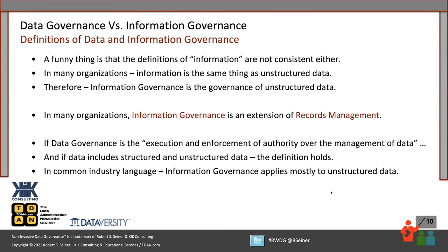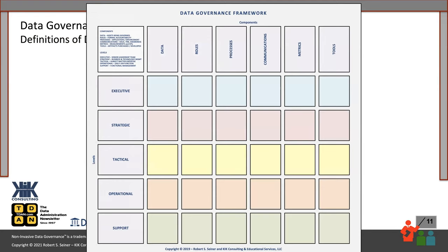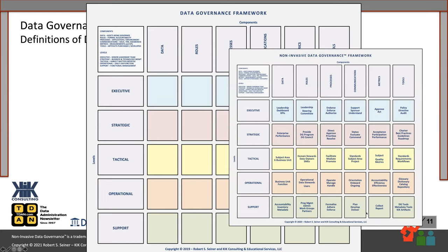I've seen organizations do information governance that are focusing on both structured and unstructured data. But it's good to ask: what are you defining as that thing you're going to govern? In the past in these webinars, I have shared with you a framework for data governance. The question is, can you use a data governance framework to govern your information as well? I'll go through the core components of a successful program and the different levels or perspectives we need to look at those components from.